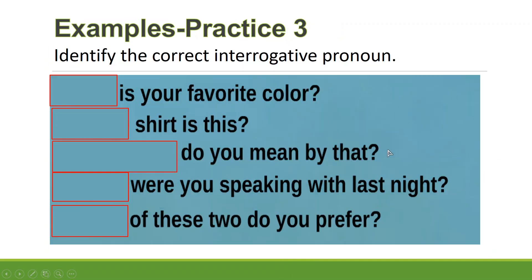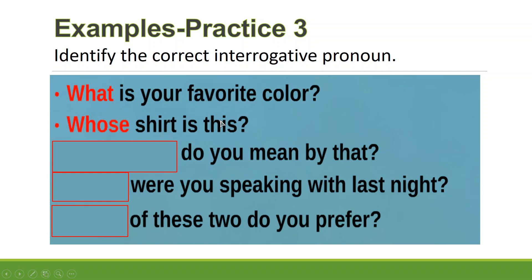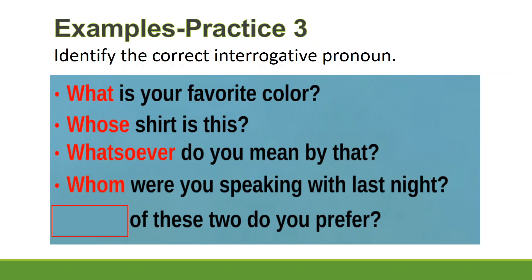For practice number three, identify the correct interrogative pronoun. Number one: '_____ is your favorite color?' — 'What.' Number two: '_____ shirt is this?' — 'Whose.' Number three: '_____ do you mean by that?' — 'Whatsoever.' Number four: '_____ were you speaking with last night?' — 'Whom.' Number five: '_____ of these two do you prefer?' — 'Which.' Remember, there are only five interrogative pronouns.